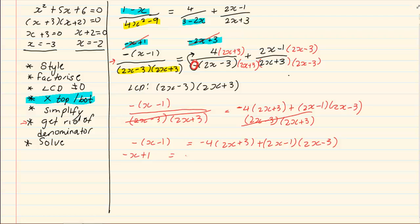Minus x plus 1 is equal to minus 8x minus 12 plus 4x squared plus 3 minus 2x minus 6x. Make it equal to 0, so we have 4x squared. If we bring over, we've got minus 8x minus 2x is minus 10, minus 6x, which will give us minus 16x, plus 1x, which will give us minus 15x. Then we have minus 12 plus 3 is minus 9, minus 1 is minus 10, equal to 0.